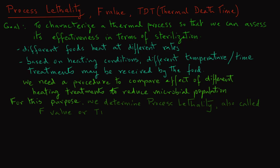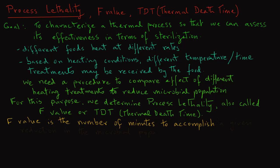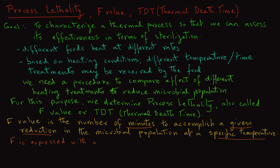As I mentioned before, also called the F value or the thermal death time TDT. F value is defined as the number of minutes to accomplish a given reduction in the microbial population at a specific temperature. Note that the F value is always in minutes, in units of time, and it reflects a certain reduction in the microbial population at a specified temperature.